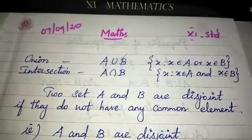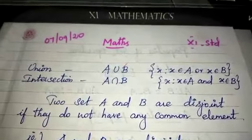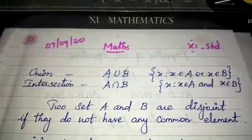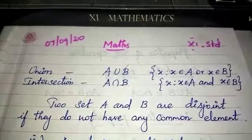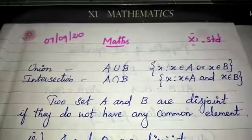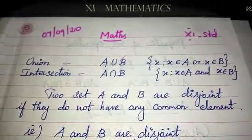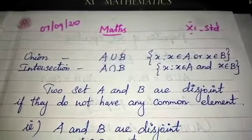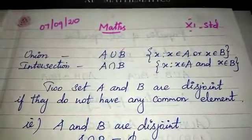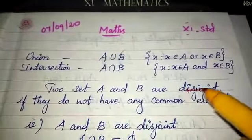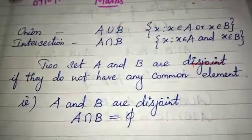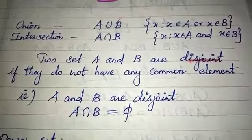Hello students, now we are discussing about properties of subsets. We already know union and intersection. Union means collection of set elements. Intersection means the intersecting elements. Two sets A and B are disjoint if they do not have any common element. That is, A intersection B is equal to the null set (φ).